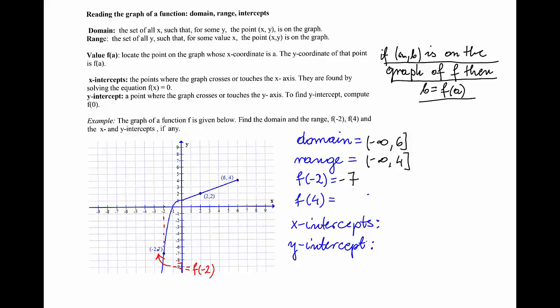If I want f(4), I will do the same: I need to find the point on the graph that has x-coordinate 4. That point is going to be (4, 3).